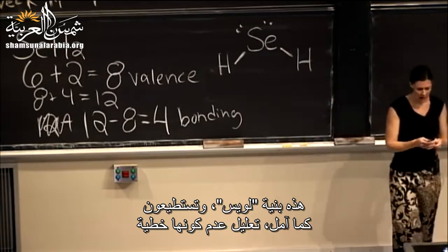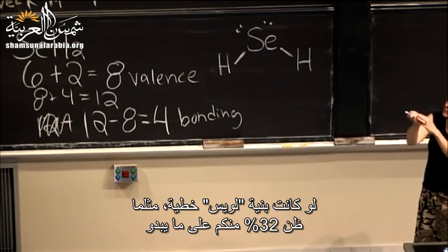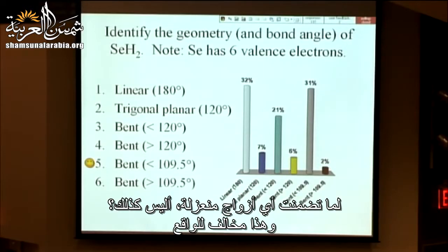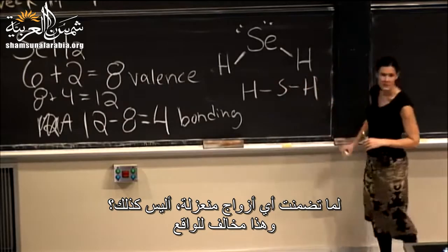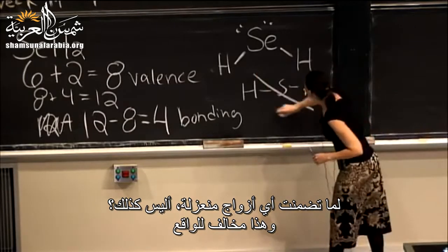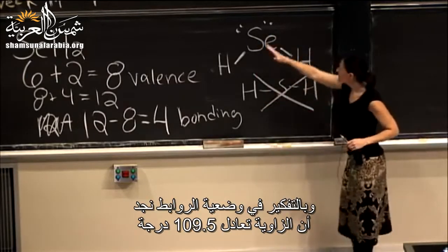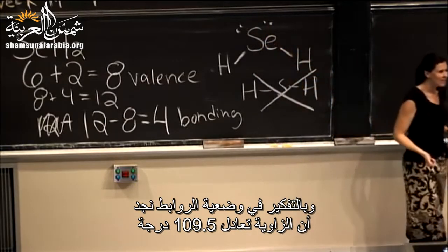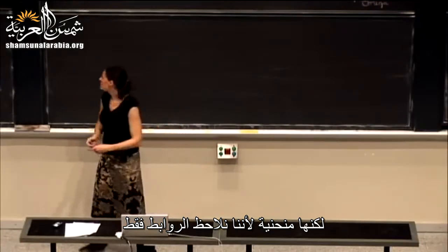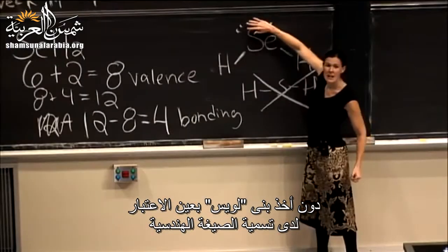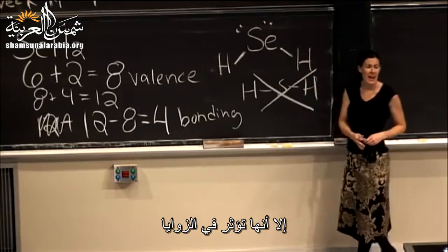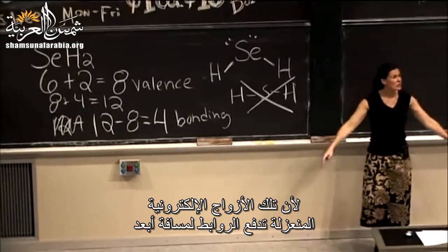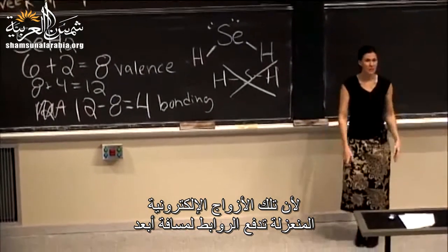Hopefully you can see why it's not linear. If it were linear, as thirty-two percent of you seemed to think, that would mean our Lewis structure had no lone pairs — which is not the case. We have two lone pairs. If we thought about what the bonds were everywhere, it would be 109.5 degrees. But it's bent because we're only looking at the bonds; we don't count the lone pairs when naming geometry, though they do affect the angles. It's actually less than 109.5 degrees because those lone pairs are pushing the bonds even further away.